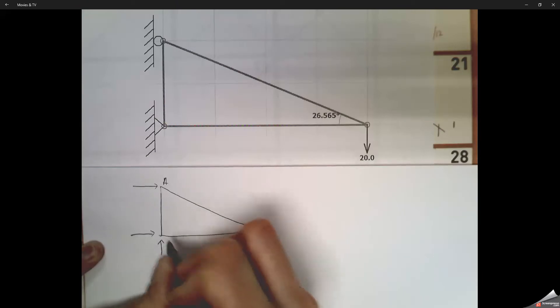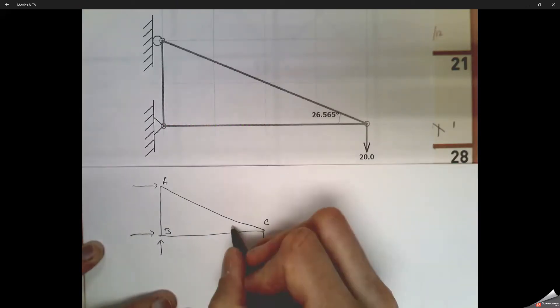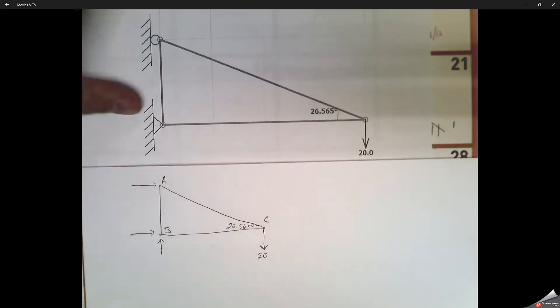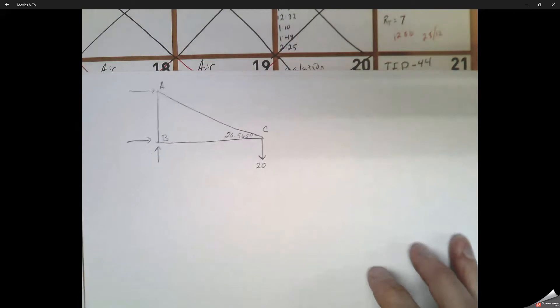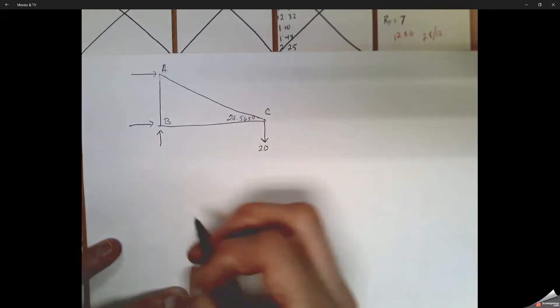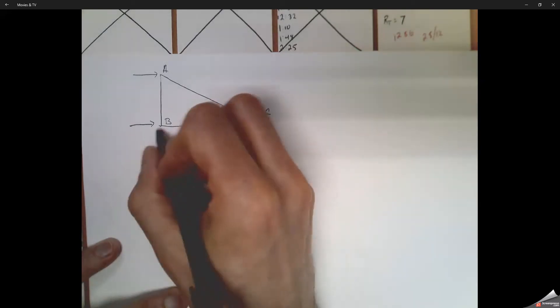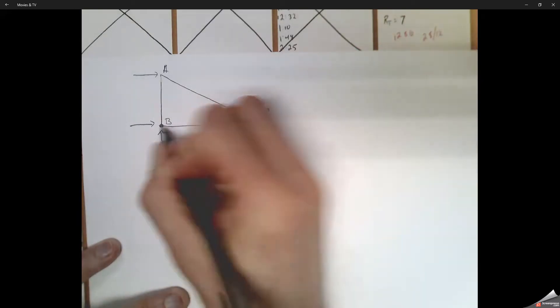So what we're going to do is look at the free body diagram. The roller has one force acting upon it and the pin has two forces acting upon it. And again, we know we've got a 26.565 degree angle. We've got to calculate tension and compression forces acting upon each member and the reaction forces at each pin of our individual truss.